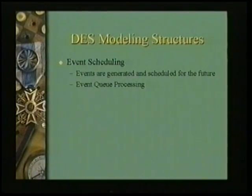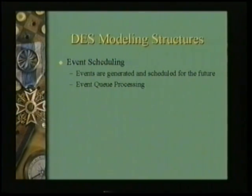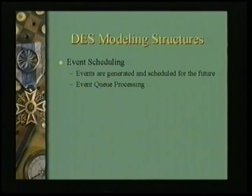When you describe a discrete event model by those seven components, you haven't described everything — you can structure them in different ways. The first widely accepted modeling structure is event scheduling, where events arrive from some outside source and get queued in a master event queue. The simulation engine goes to the event queue, takes the most current event, delivers it to the appropriate object or function to execute, and then gets the next event.